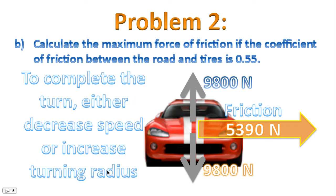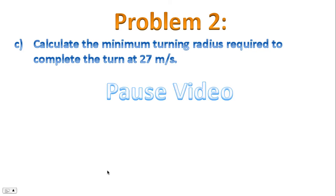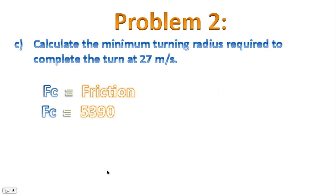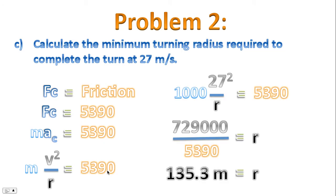To complete the turn, we either need to decrease the speed or increase the turning radius — that's the point of Part C: calculate the minimum turning radius to complete the turn at 27 meters per second. We know 60 meters fails. Starting with Fc equals friction and using our upper limit of 5,390 newtons, substituting our numbers, we end up with a radius of 135.3 meters, or in significant digits, 140 meters. We must increase the turning radius to decrease centripetal acceleration and reduce the force required.